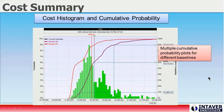Cumulative probability is useful for setting cost contingency, which would be the difference between the deterministic value — seen as the straight red line — and a cumulative probability with a higher confidence level, such as P80. In addition, we can plot multiple cost scenarios representing different risk management strategies as cumulative probability plots. In this particular view, we are looking at pre- and post-mitigated baselines.